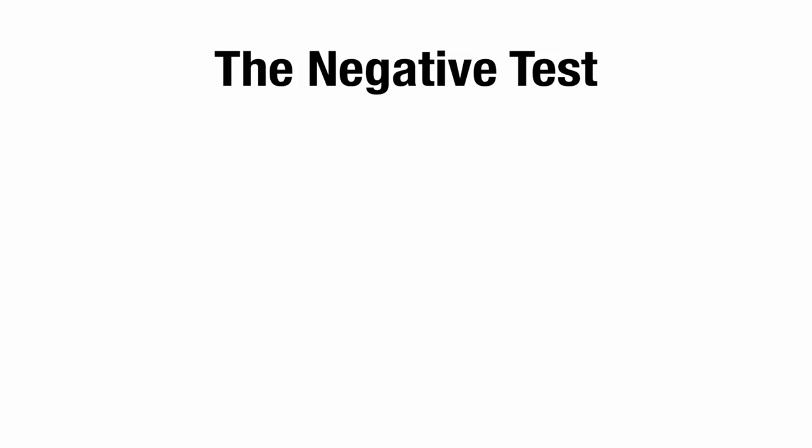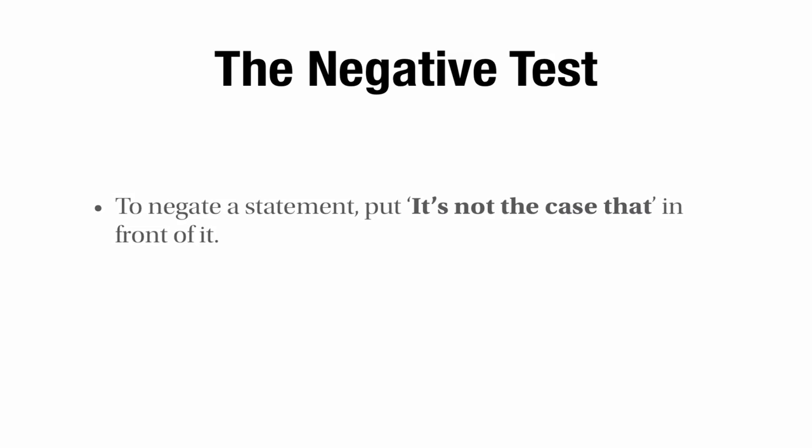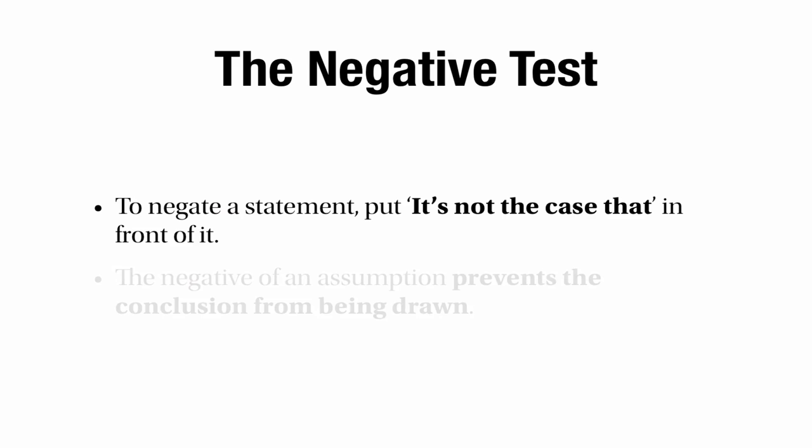So that's how the negative test works. Remember, you negate a statement by putting 'it's not the case that' in front of it, which often comes to the same thing as simply inserting a 'not' in the right place. The negative of an assumption prevents the conclusion from being drawn — it makes the argument into a nonsense. You can use this to test any possible assumption to work out whether it really has to be true for the argument to work.